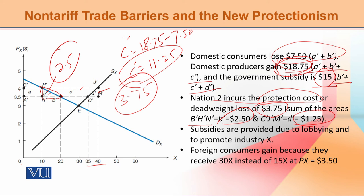اب ایک اہم سوال یہ اٹھتا ہے کہ اگر صرف producer کو فائدہ ہو رہا ہے تو states subsidies دیتی ہی کیوں ہیں؟ Consumers کو loss ہو رہا ہے — اس کی ایک major reason یہ ہے کہ lobbing ہوتی ہے۔ State کے اندر جو powerful circles ہوتے ہیں وہ lobby کرتے ہیں جس کی وجہ سے state مجبور ہوتی ہے particular industries اور sectors کو subsidize کرنے میں۔